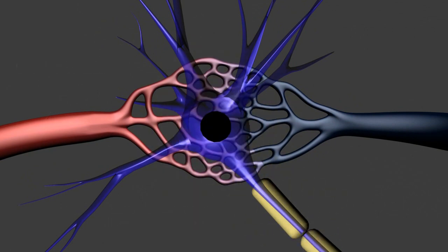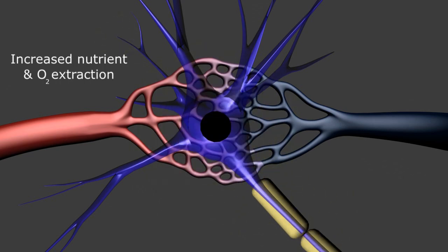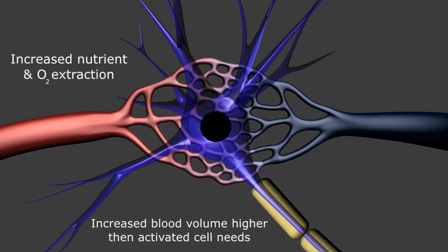Even though the activated neurons are more efficiently extracting the oxygen from the heme molecules, the increased volume of blood is more than sufficient to meet metabolic demands, and we actually end up with a paradoxical increase in the reddish oxyhemoglobin in the downstream vessels.